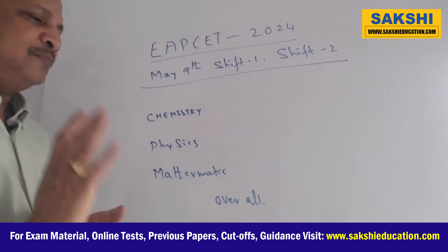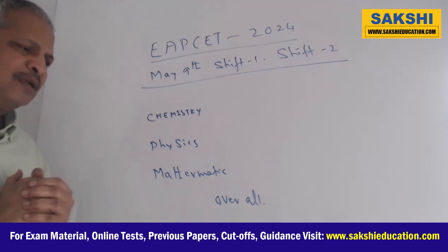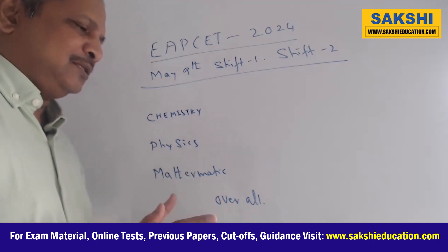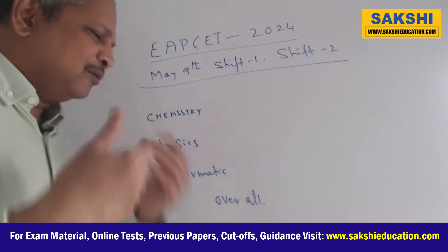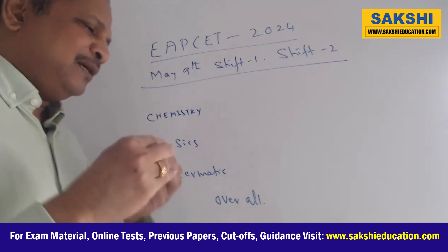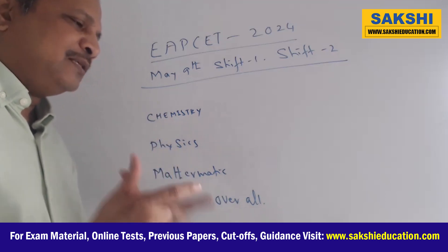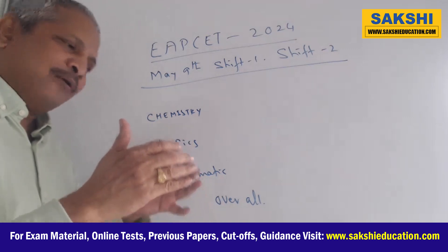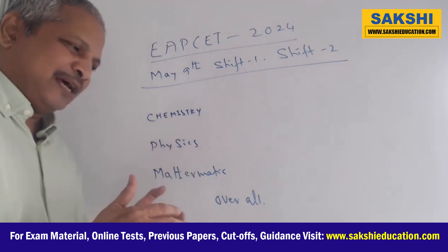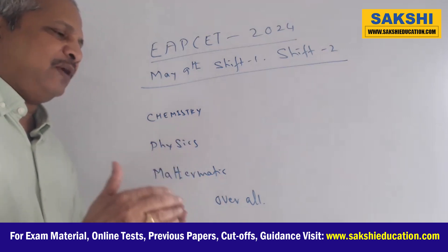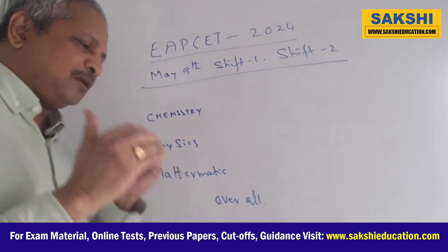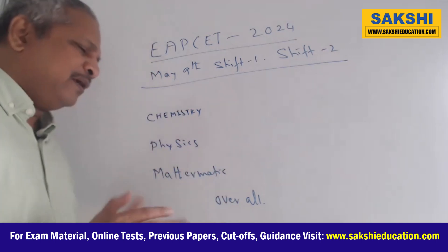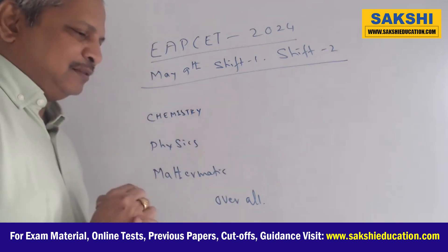Next, coming to mathematics. As expected every year — the same thing for the last three years also — mathematics will be tough and lengthy. But here, what happened is the problems are not that tough; they are easy and known. The majority of the questions — around 60 to 65 questions — are known. Methods are also known and everything is known, but calculations are lengthy.